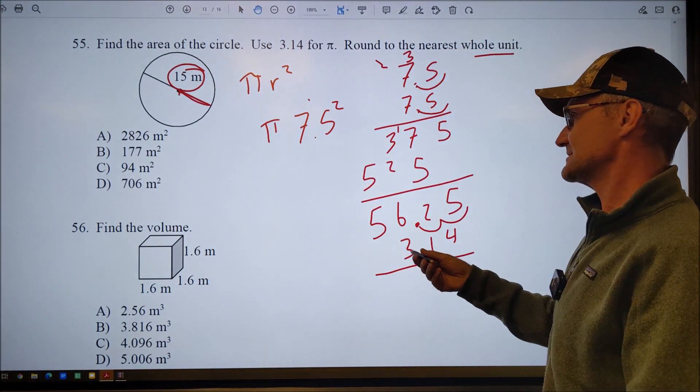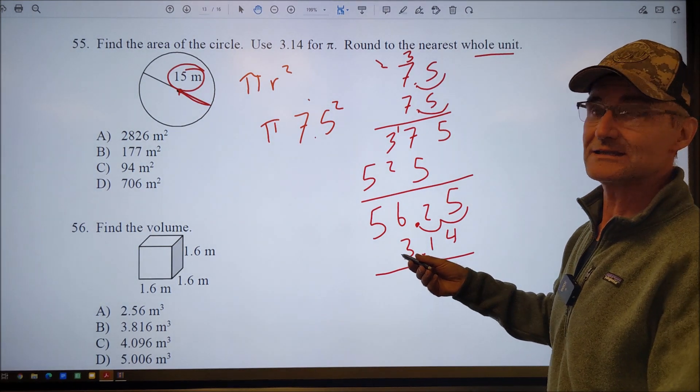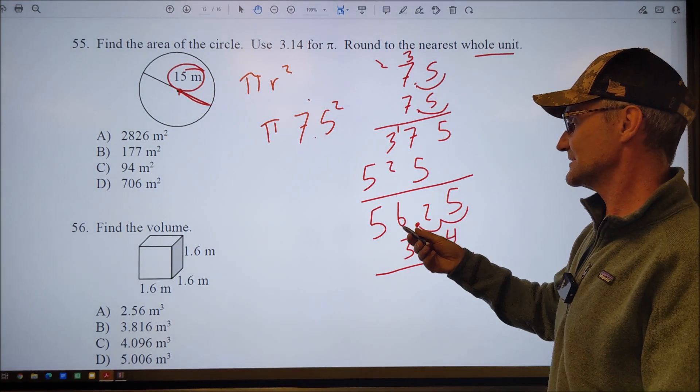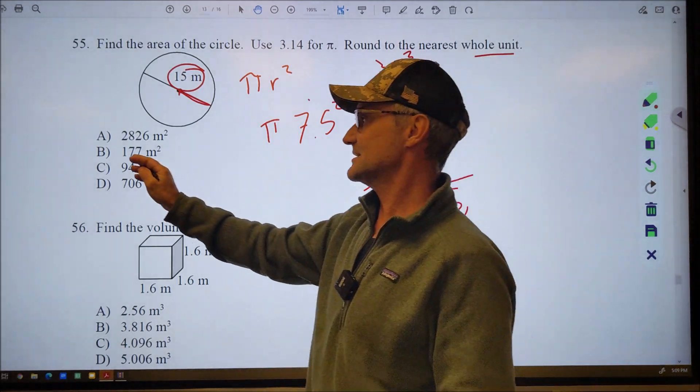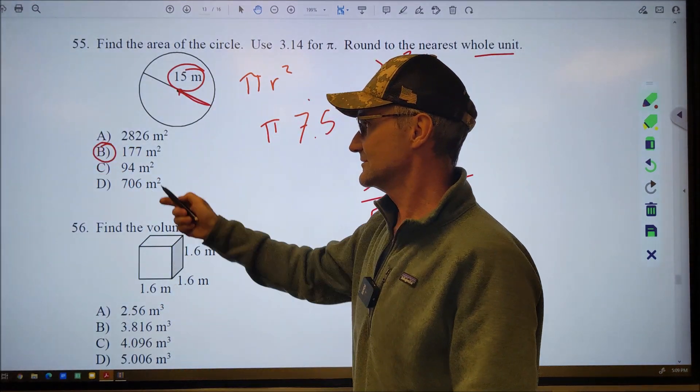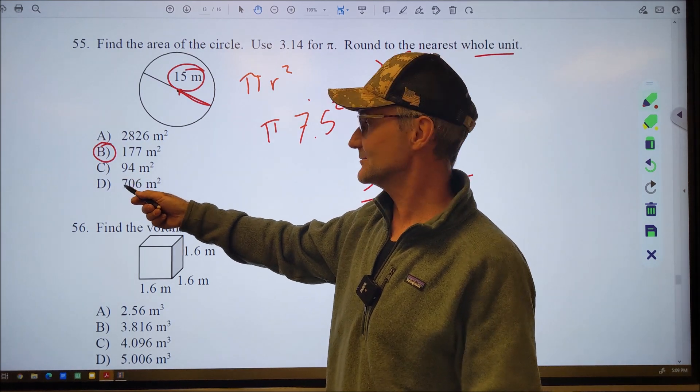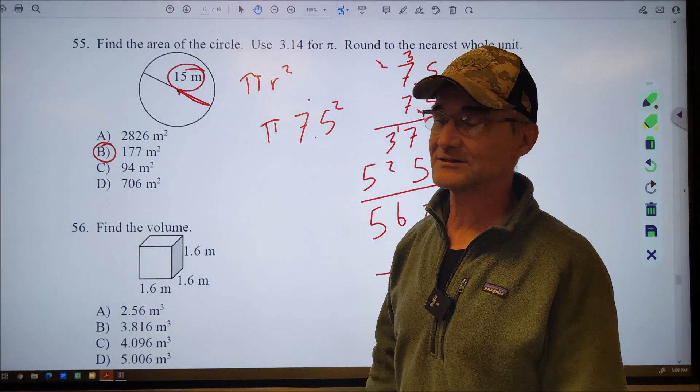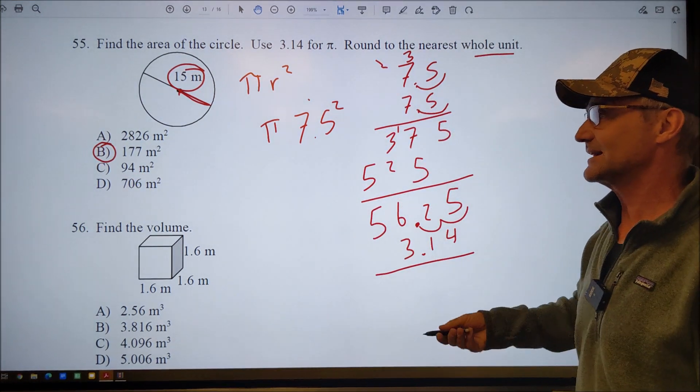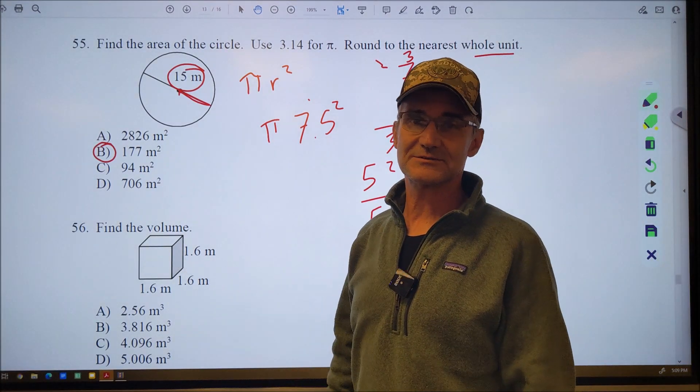But it does say round to the nearest whole unit. So now that I have 56 times 3, I can just look over here and see if there's anything close. And I can see, well, 60 times 3 is 180. This is a little bit less than 60. So 177 is pretty close. 2,000 is a million miles away. 94 is a million miles away. And 706 is not even close. So I don't actually have to multiply that out. 177 is going to be the answer.